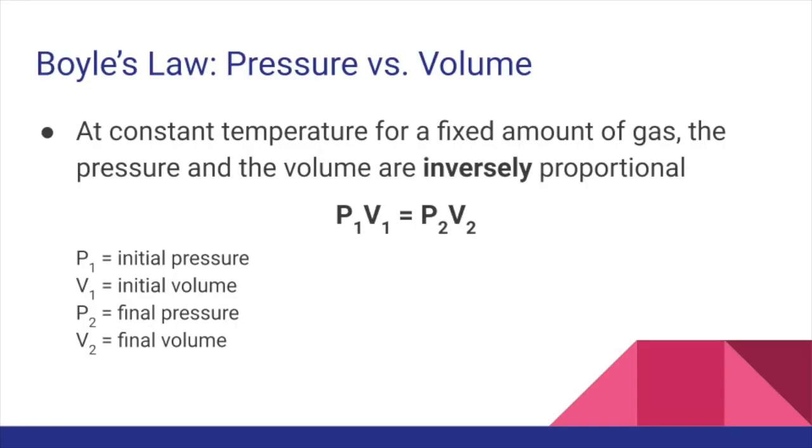The observation that the pressure in the balloon increases as the volume decreases is known as Boyle's law. Boyle's law states that at a constant temperature for a fixed amount of gas, the pressure and the volume are inversely proportional. Inversely proportional means that as one of the variables increases, the other decreases by the same factor. For example, if you double the volume of a gas, then its pressure will be cut in half. Or if you cut the volume down to a third, then the pressure will triple.